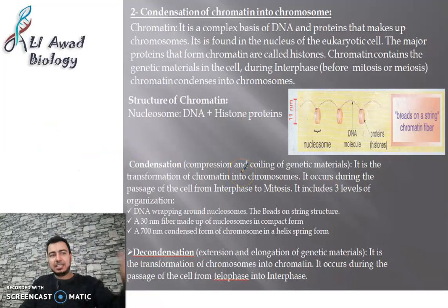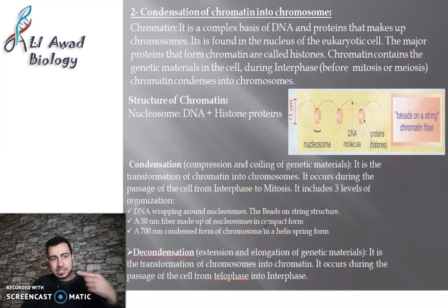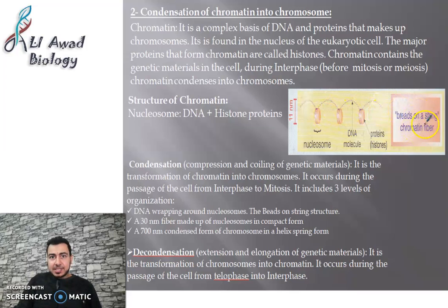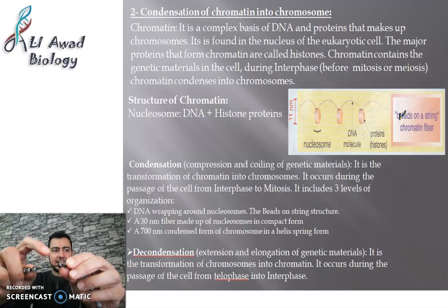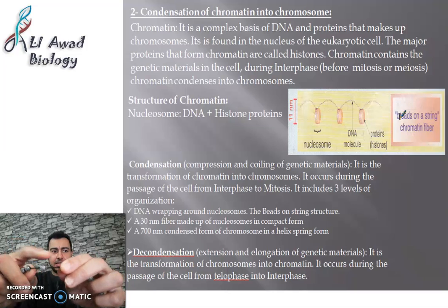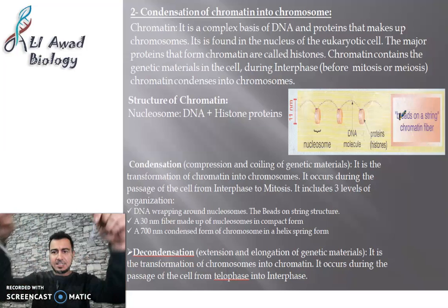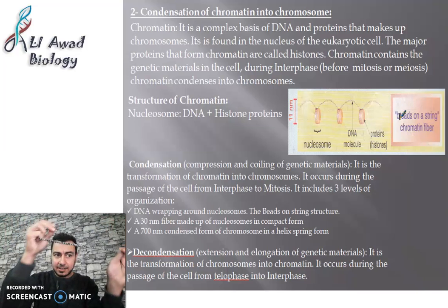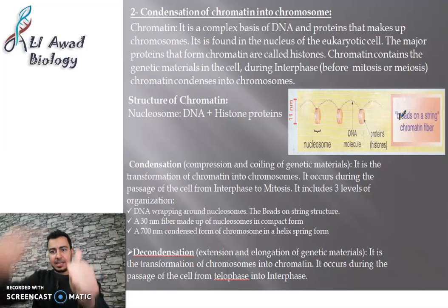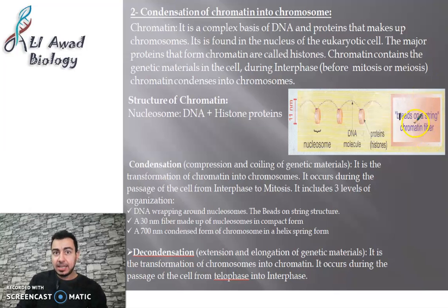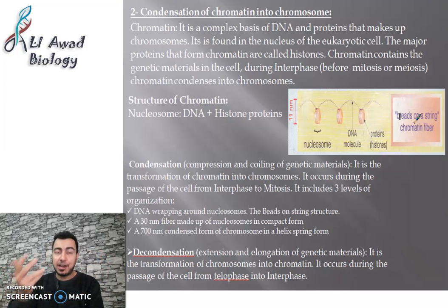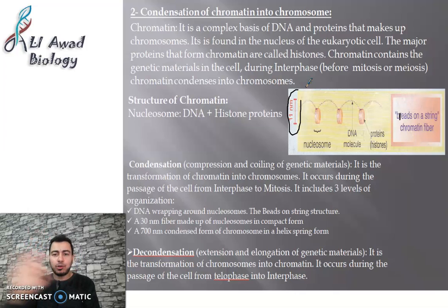The chromatin structure is described as 'beads on a string' — like a rosary. The string is the DNA, and each bead is a histone protein. Together, this is the chromatin, also called a chromatin fiber. The diameter of this chromatin is 11 nanometers — 11 × 10⁻⁹ meters. You can see how incredibly small this is.